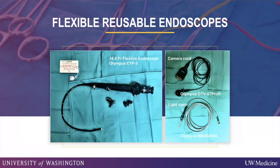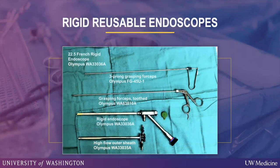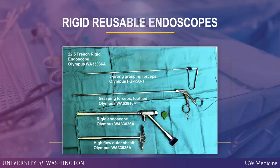This is one of the reusable scopes — the workhorse flexible scope. This is a 16.5 French scope, fantastic for biliary work, urologic work, and gastrointestinal work as well. In contrast, this is a 22.5 French rigid endoscope — also reusable — and this is the best scope for removing gallstones and also for removing staghorn calculi or renal calculi in general.